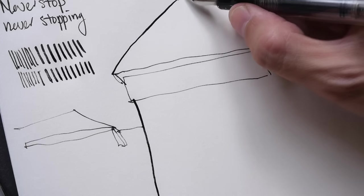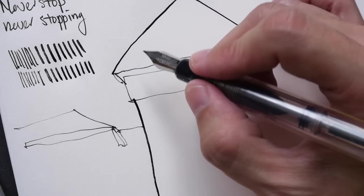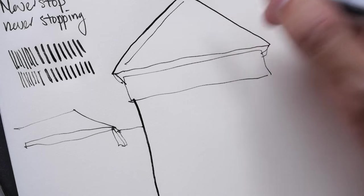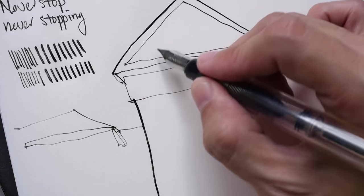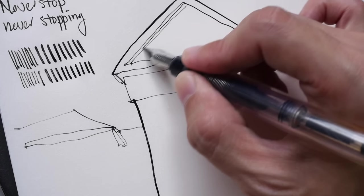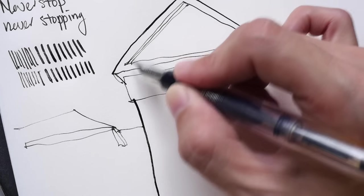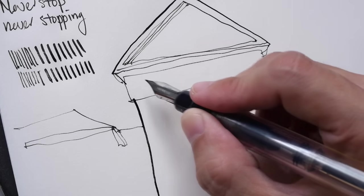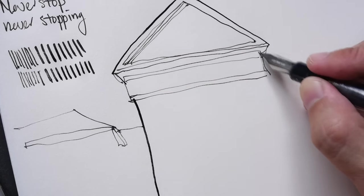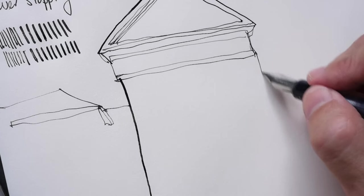I actually have a Namiki Falcon pen that has been modified with Spencerian modification, and that pen is really very flexible. What I mean by that is you can just apply a bit of pressure and you can get the lines to vary in thickness very, very easily.